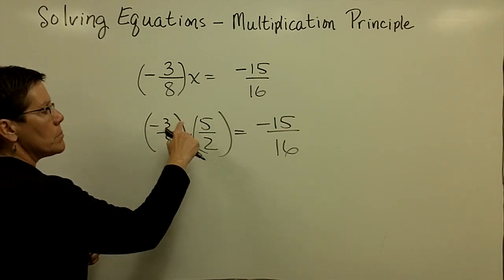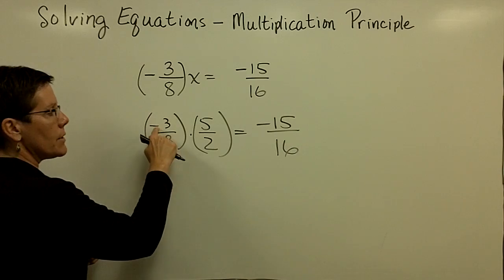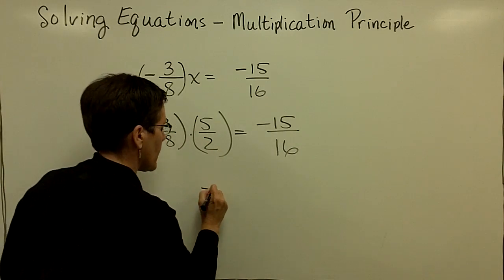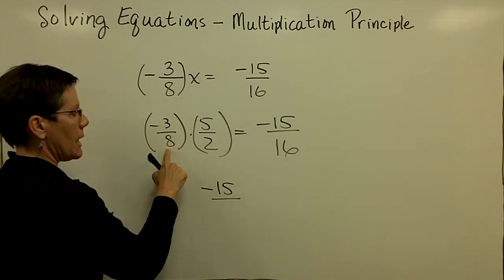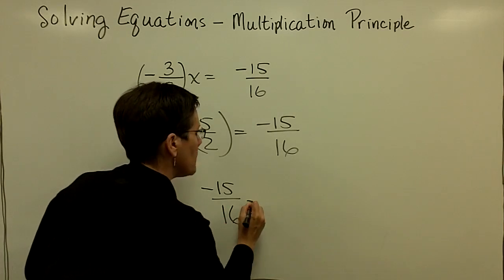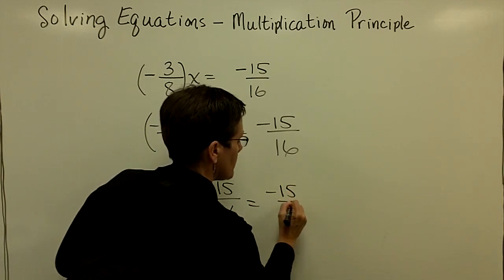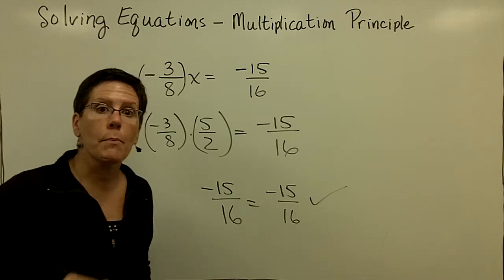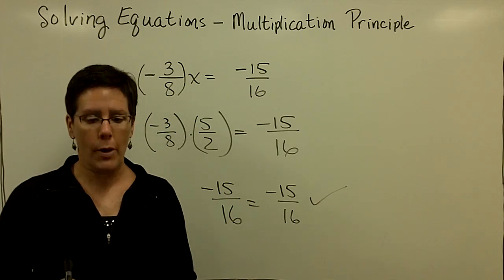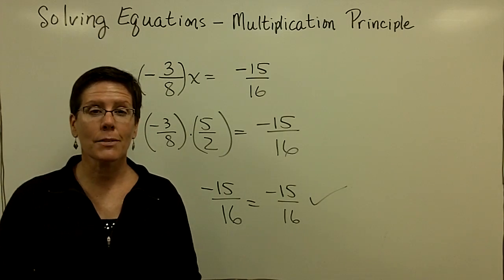So a negative 3 eighths times 5 halves. And I wonder if that equals a negative 15 over 16. And so I'm going to go ahead and multiply the numerators together right here. A negative 3 times a positive 5 is a negative 15. And 8 times 2 is 16. That is what the right side is equal to. And I get to stop and say, I know I got that problem correct. I solved correctly by checking after the fact.